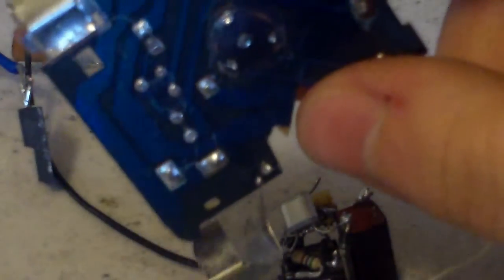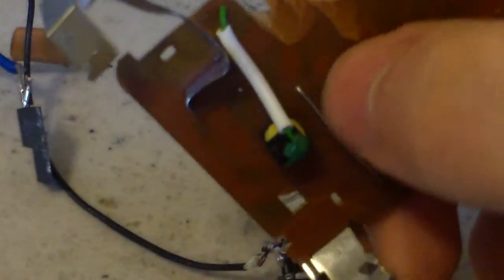Basically in a disposable camera there will be a flash circuit. Looks kind of like this. And there will be a little inverter on there. And the flash runs on about 300 volts.